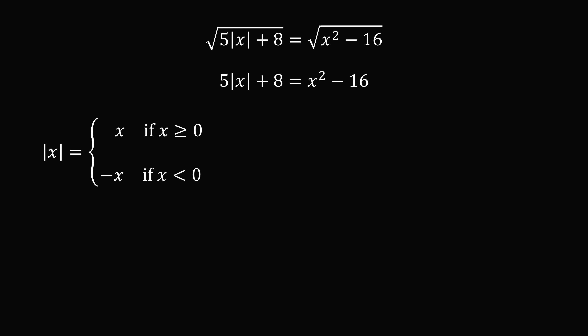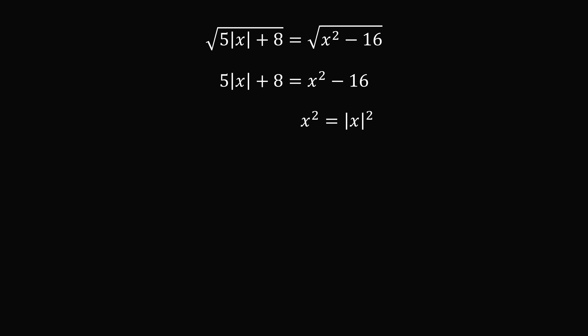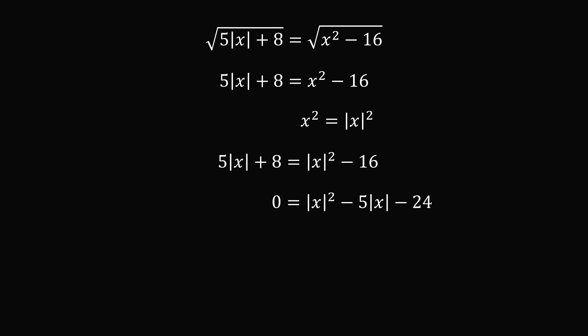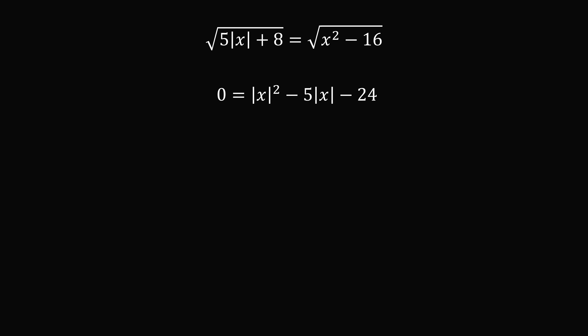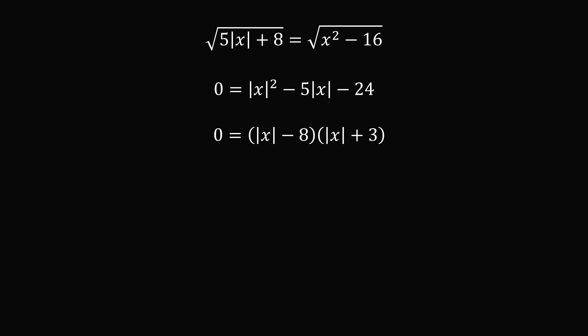We could use the definition of absolute value and approach by cases, but there's another neat way to solve it. Since x squared equals the square of the absolute value of x, we substitute that into the equation. Then we subtract 5 times the absolute value of x and subtract 8 from both sides, giving: 0 equals the square of the absolute value of x, minus 5 times the absolute value of x, minus 24. This is a quadratic equation in the term absolute value of x. We factor it: 24 has factors 8 and 3, which differ by 5, giving one factor as the absolute value of x minus 8 and the other as the absolute value of x plus 3.